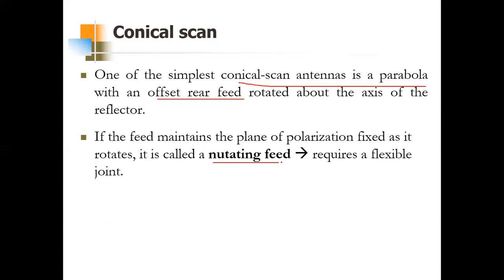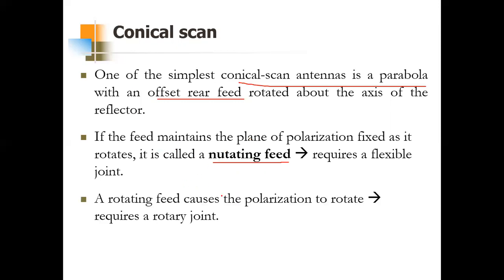Another important term to remember is nutating feed. The feed used here in conical scan is a nutating feed. There is another feed called a rotating feed. The basic difference is: in conical scan we need rotation of the beam. In nutating feed, the advantage is it maintains the plane of polarization.